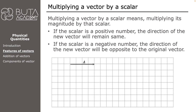Let's assume we have vector A with a length of four units. Multiplying it by two means drawing a vector with a length of eight units, since two times four equals eight. We can also multiply a vector by a negative number. If we multiply four by minus one we get minus four — meaning a vector of the same length but pointing in the opposite direction, so four units long pointing to the left. If we multiply vector A by minus two we get a vector of eight units also pointing to the left, due to the minus sign.